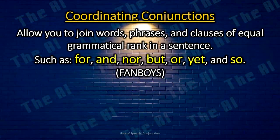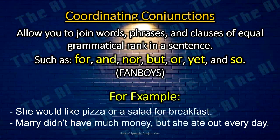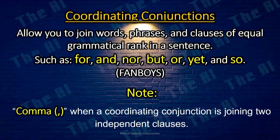Coordinating conjunctions. Coordinating conjunctions allow you to join words, phrases, and clauses that are of equal grammatical rank in a sentence, such as for, and, nor, but, or, yet, and so — we call this FANBOYS. For example: She would like pizza or a salad for breakfast. Mary didn't have much money, but she ate out every day. Please note the comma when a coordinating conjunction is joining two independent clauses.